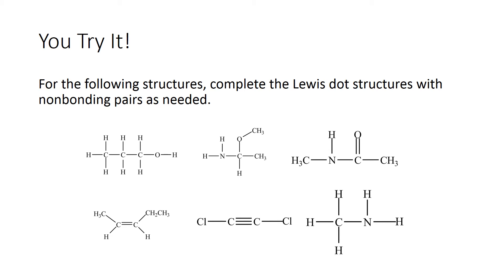Take these rules and complete these Lewis dot structures by putting in non-bonding pairs as necessary. For the first structure, oxygen needs two non-bonding pairs. For the second, both nitrogen and oxygen need non-bonding pairs — two on the oxygen and one on the nitrogen. For the next, nitrogen has one non-bonding pair and oxygen has two. One structure needs no non-bonding pairs. The chlorines each need three non-bonding pairs.